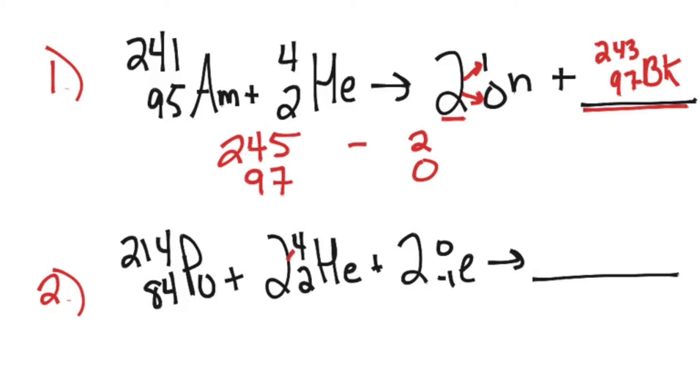So I have 2 alpha particles. So I multiply 2 times 4, and I get 8, and I also see that I have 2 beta particles, or 2 electrons, however you want to view that, and again there's a coefficient in front, so I've got to multiply 2 times 0, which is still just 0.